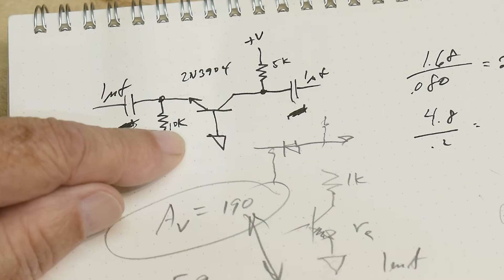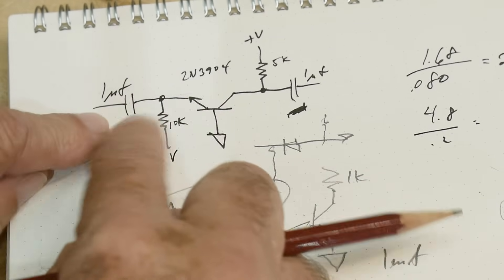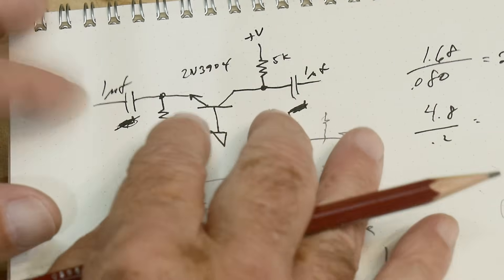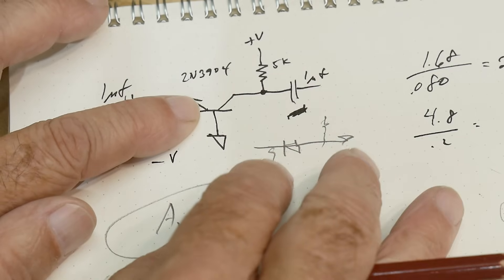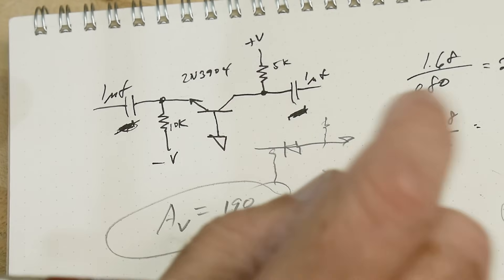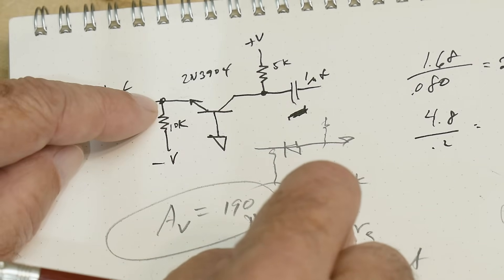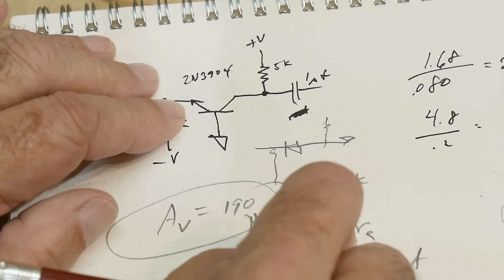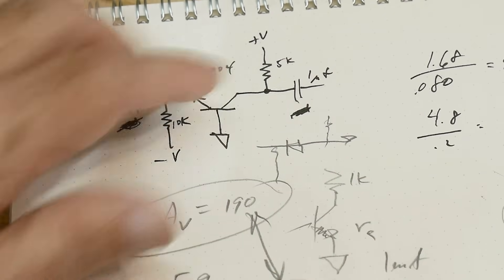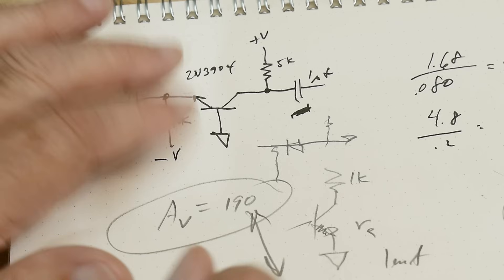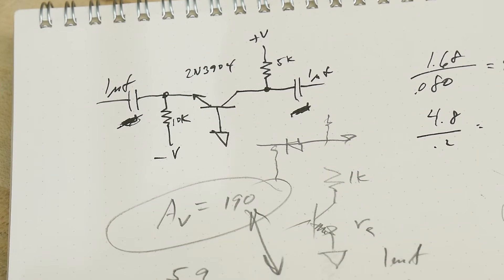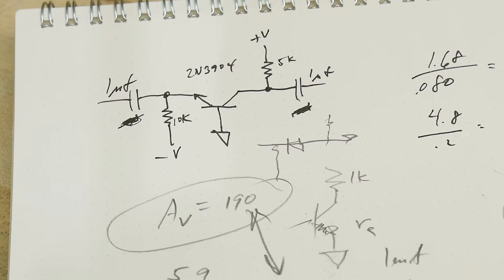The input impedance is through this emitter-base junction here, so you're getting like 26 ohms of input resistance in this thing. The input resistance is going to be very low, and the output impedance of this thing is very high - it's going to be 5k. Input 26 ohms, output 5k. Usually you want it the other way around - high input and low output. So only special cases where you do common base amplifiers, but at least I thought I'd show one today.